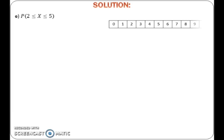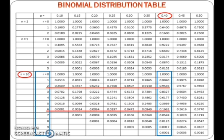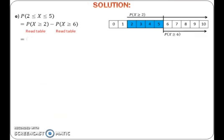To find the probability of x from 2 to 5, first draw a number line from 0 to 10. After that, mark the part that we want, which is 2 until 5. To get this, take the probability of x greater than or equals to 2 and cut off the probability of x greater than or equals to 6. Read both values from the table and calculate the probability.